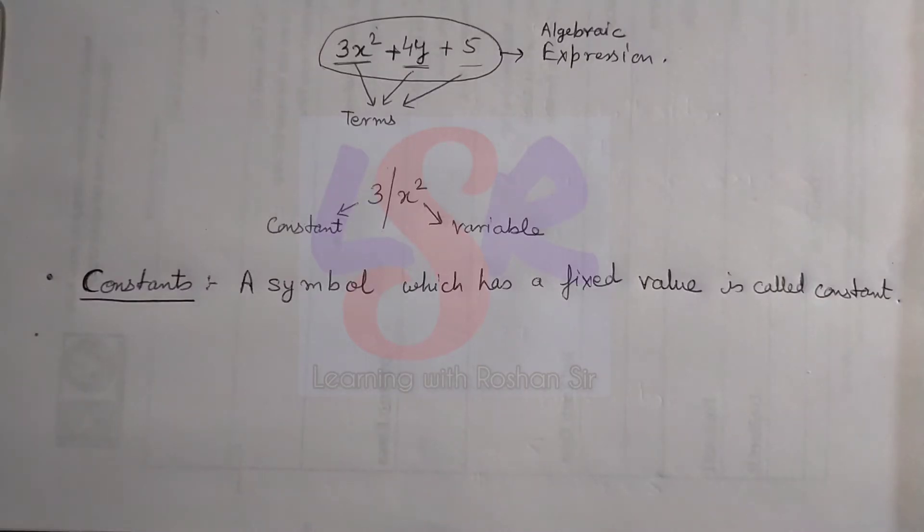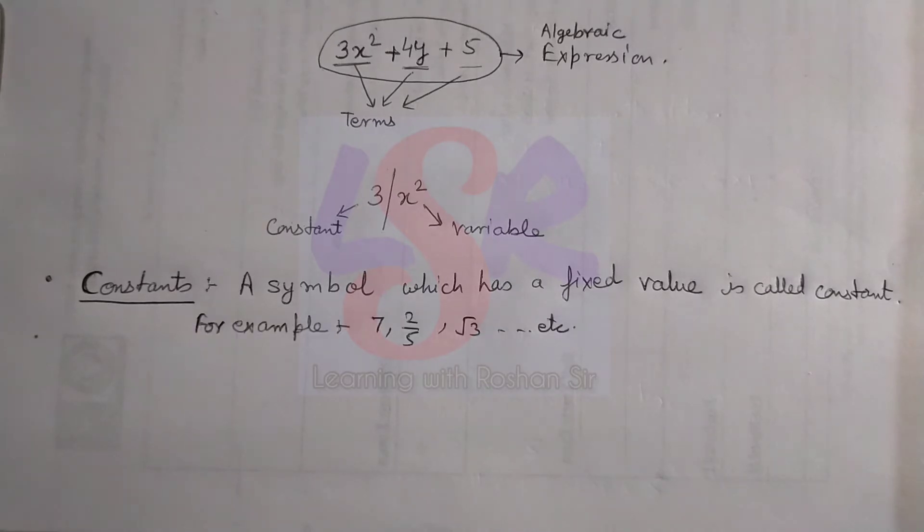A symbol which has a fixed value is called a constant. For example, 7, 2 by 5, root 3, and so on.